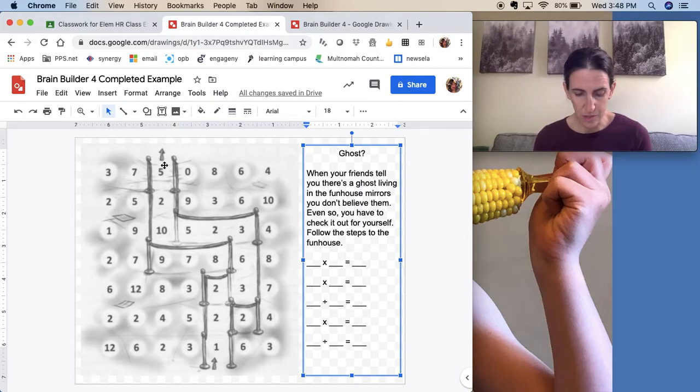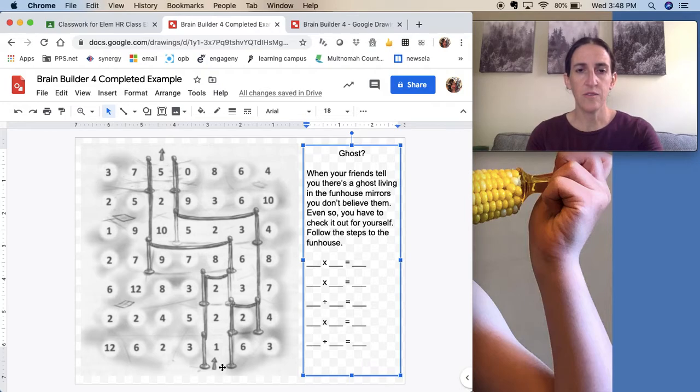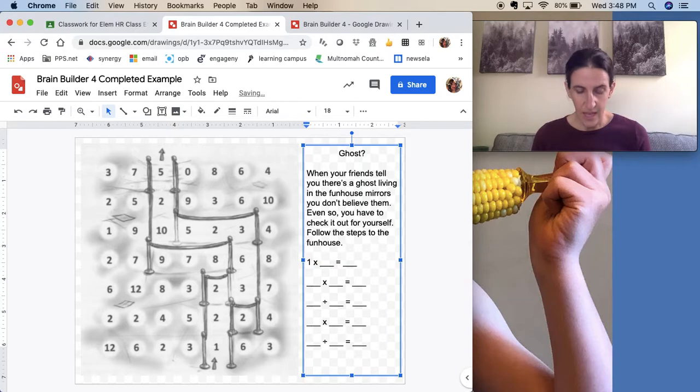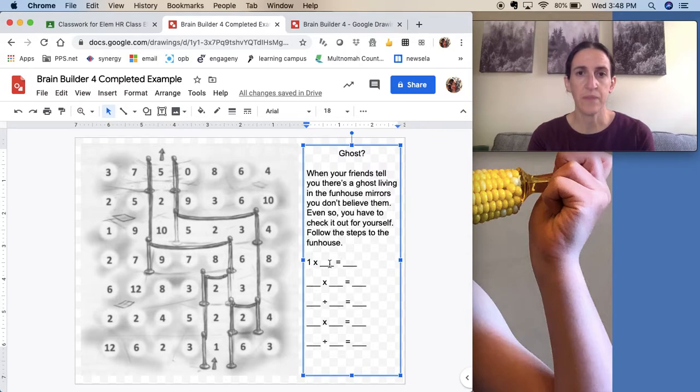So what you do is start with the number that the entrance arrow points to and then write that number in the first blank. So the entrance arrow is pointing to the one. So in the first blank, I'm going to write a one. And now what I have to do is find an adjacent number to go in the second blank to make an equation that's true. So one times something equals something. And I'm going to look at the adjacent numbers, the numbers right next to the one. One times three is three, and I don't see another three. So that doesn't work. One times six doesn't work. One times two is two. That works.